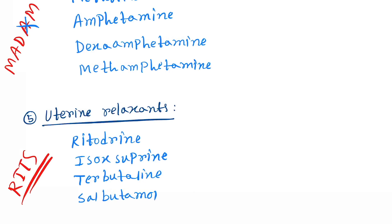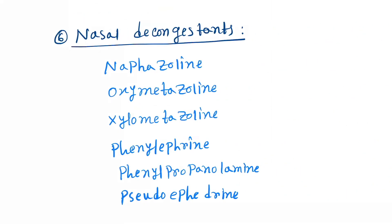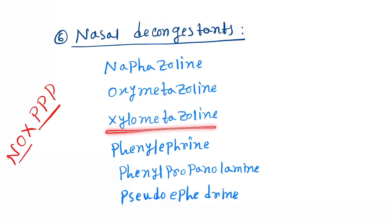Next are uterine relaxants — remember the mnemonic REEDS. R for ritodrine, I for isoprenaline, E for terbutaline, S for salbutamol. Next are nasal decongestants — remember the mnemonic NOX-PPP. N for naphazoline, O for oxymetazoline, X for xylometazoline.